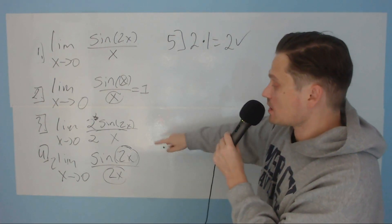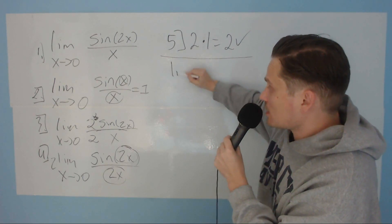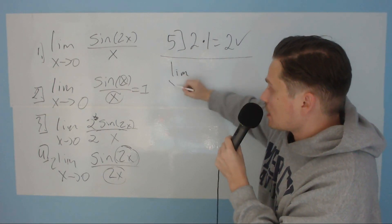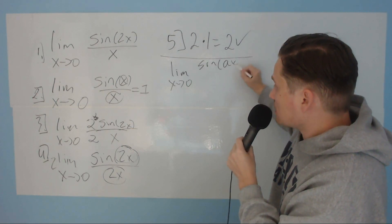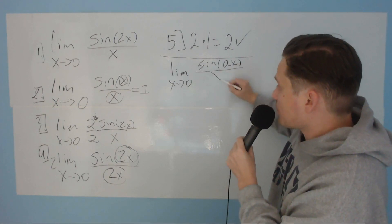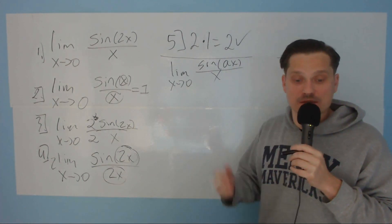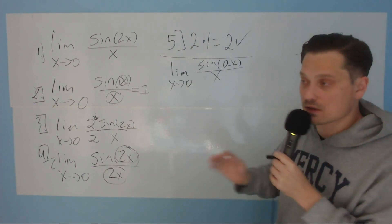Notice that this is pretty general. What I mean by that is if you had like, for example, the limit, again, as x approaches 0, say of like sine of ax over x. That a is some constant, whatever the constant happens to be, 2 or 5, whatever it happens to be.